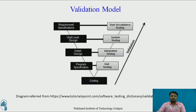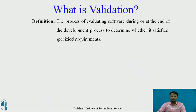Validation Model: Validation testing can be best demonstrated using the V-model. The software or product under test is evaluated during this type of testing. Validation starts from coding, unit testing, integration testing, system testing, and user acceptance testing. It is the process of evaluating software during or at the end of the development process to determine whether it satisfies specific requirements.